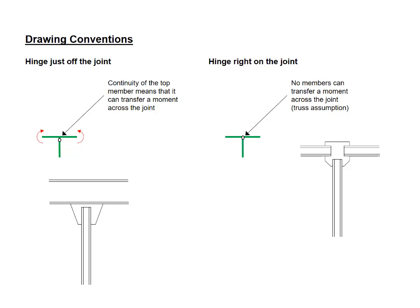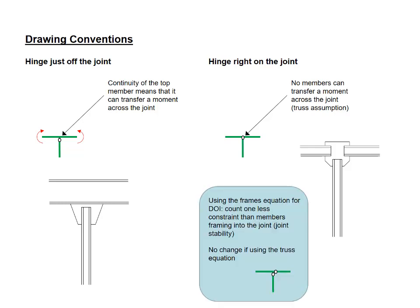A difficulty presents itself in this particular case if you use the equation for frames to calculate DOI. If you calculate the equation for trusses, this is not an issue. But if you use the equation for frames, you need to just be very careful. And essentially, you count one fewer constraint than there are members framing into the joint. And the reason for this is joint stability. In this case, there are three members framing into the joint, and I count only two hinges that effectively release the moment in two members. If those two members can't support a moment, the third one can't either. There's more that we could say about this, but this is a little bit of an advanced topic, so I'll leave it at that. Remember that if you're dealing with a truss and you're using the truss equation, this isn't an issue that you have to worry about.